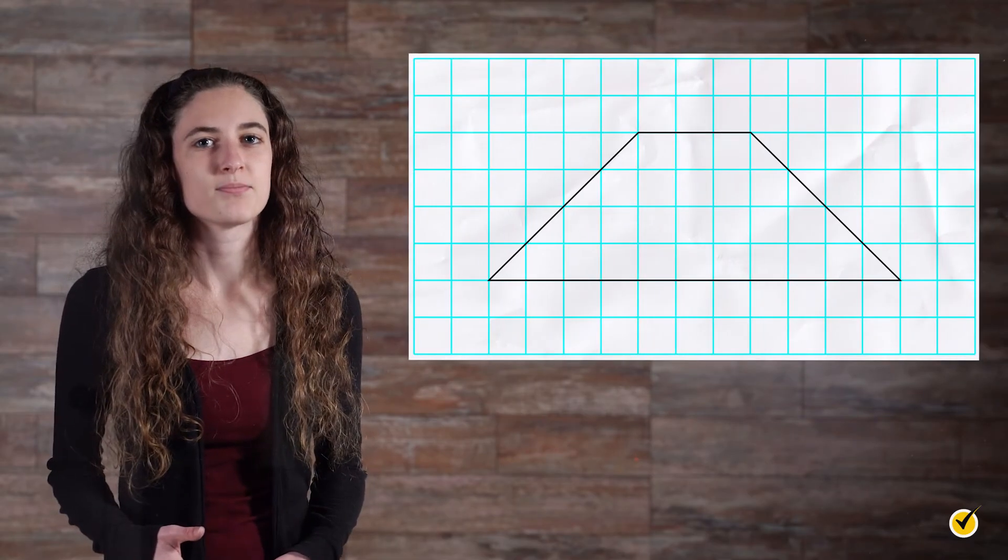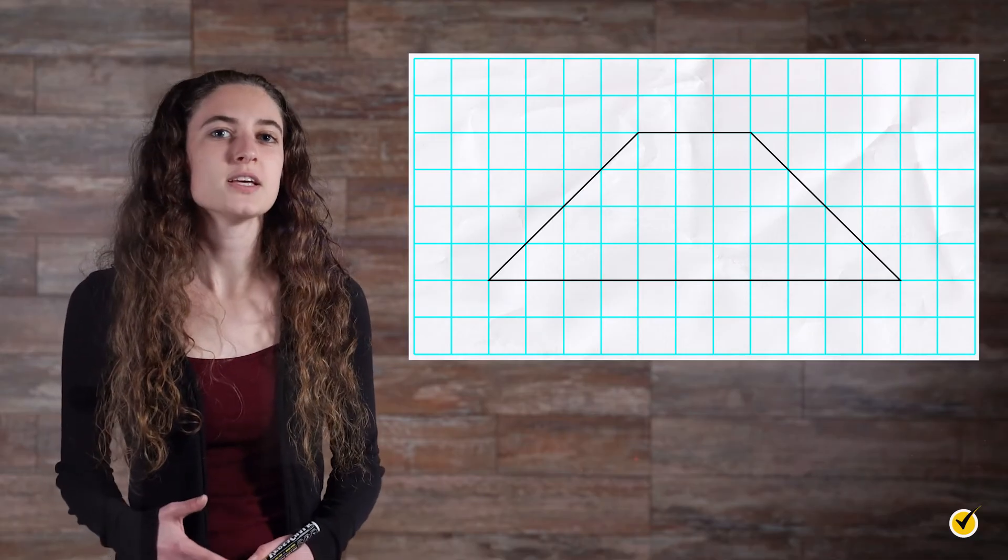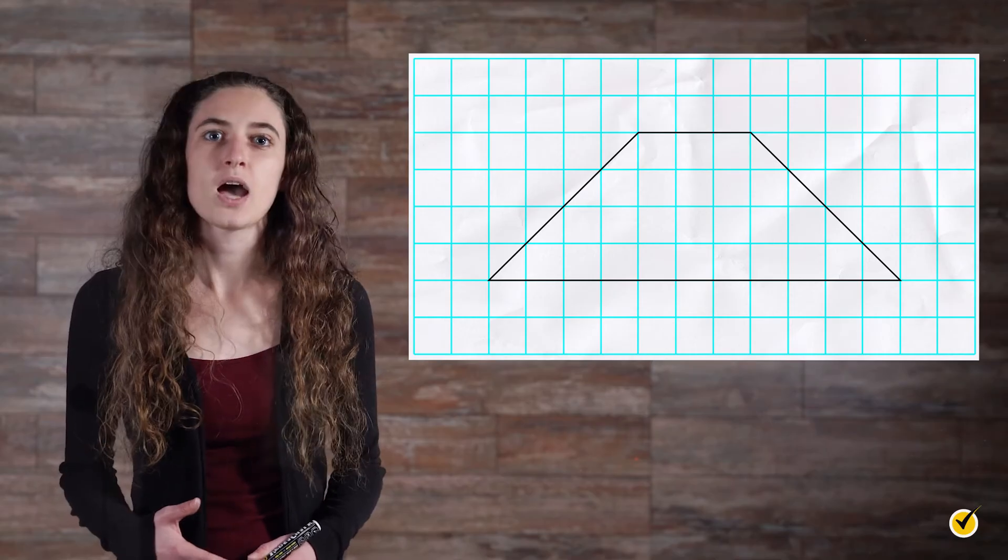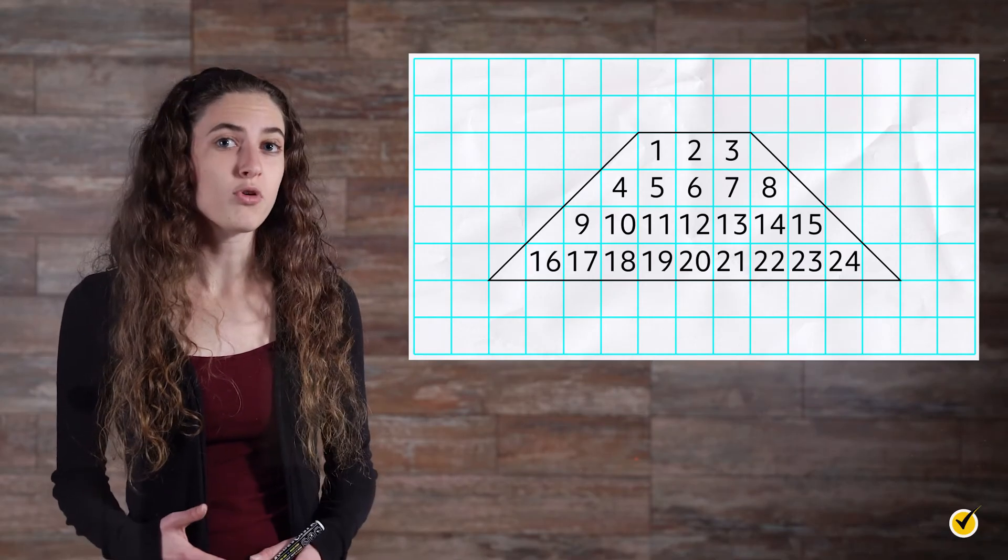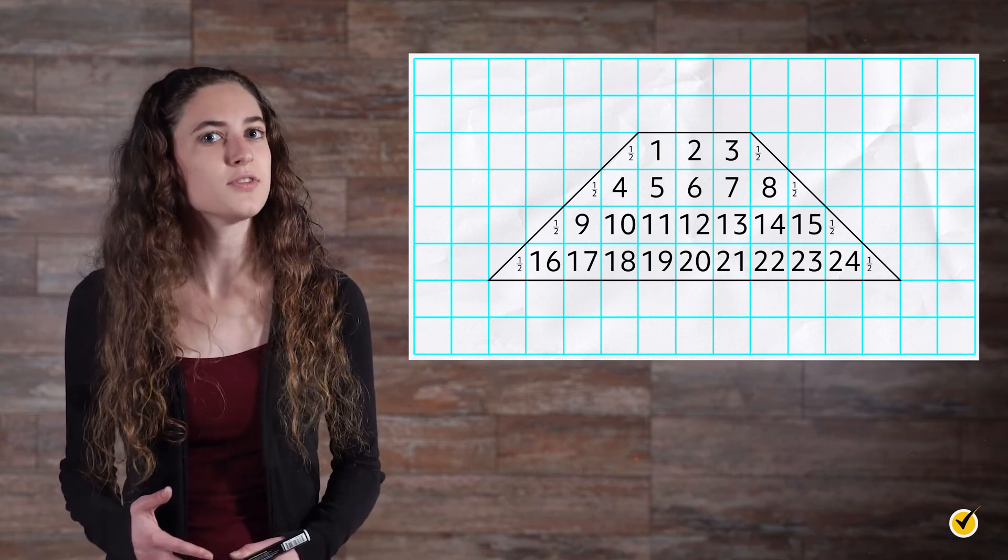Let's move on to area. Here is a trapezoid on some graph paper. Remember that area is a measure of how many square units will fit inside a shape. How many squares are inside our trapezoid? There are 24 full squares plus 8 half squares, which means the area of the trapezoid is 28 square units.